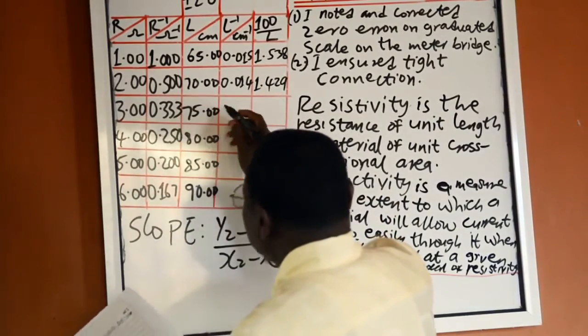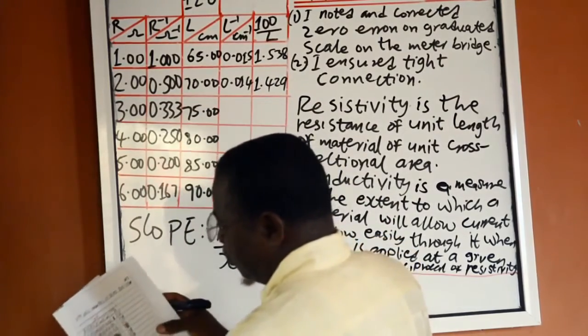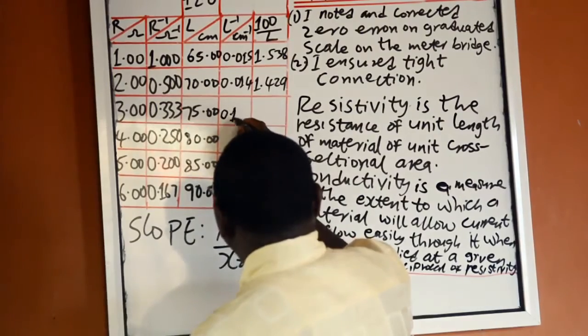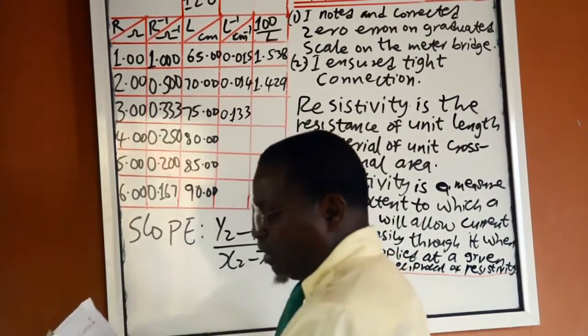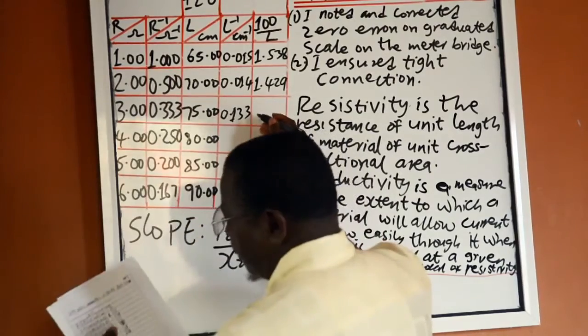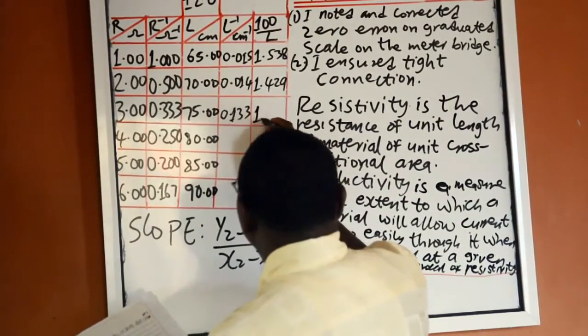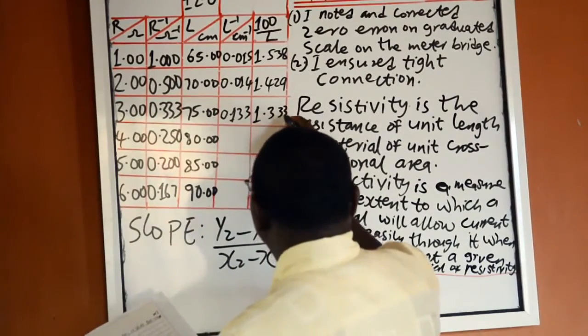1 over 75 is equal to 0.0133, and 100 over 75 is equal to 1.333.